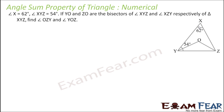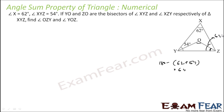It says that angle X is 62 degrees, angle XYZ is 54 degrees, and OY and OZ are bisectors of these angles. We have to find angle YOZ. We can easily find the full angle: 62 plus 54 subtracted from 180 gives us 64 degrees. So this whole angle will be 64 degrees.